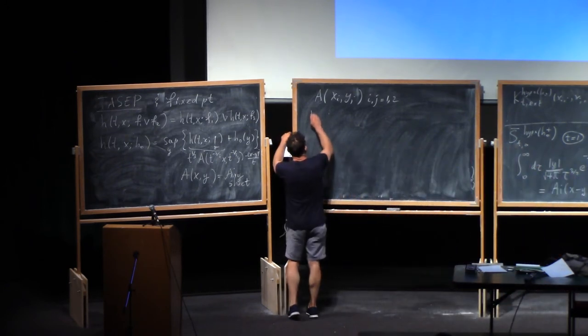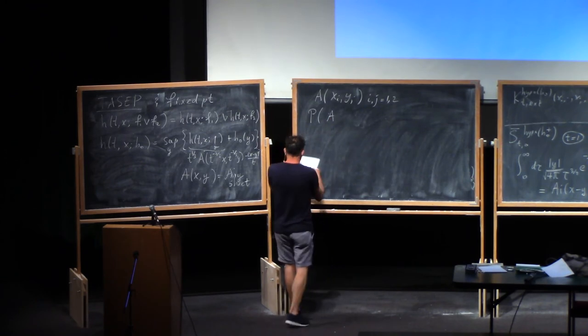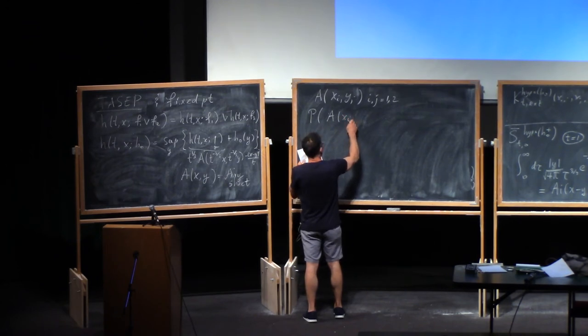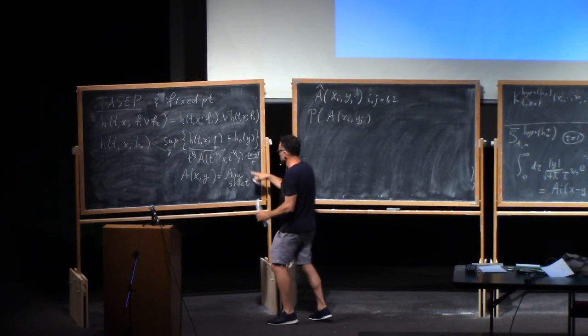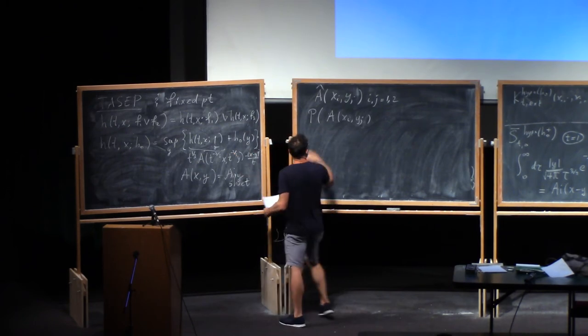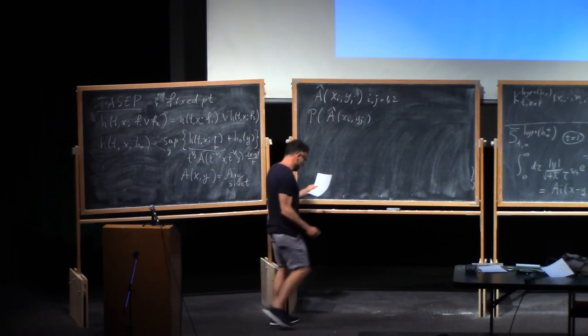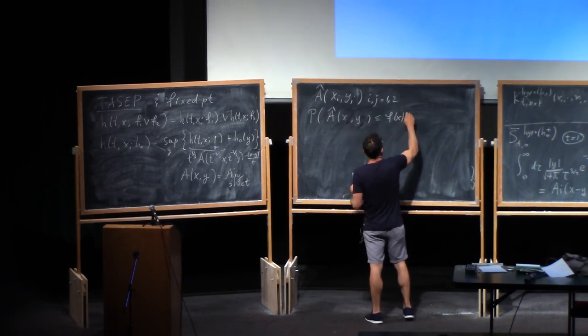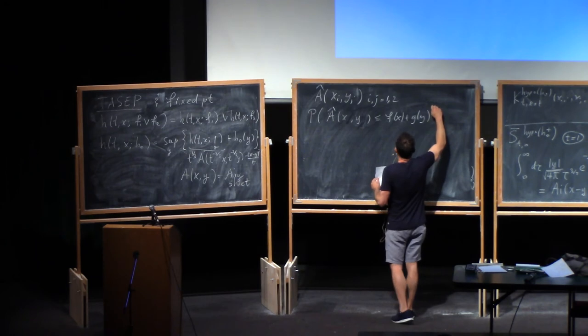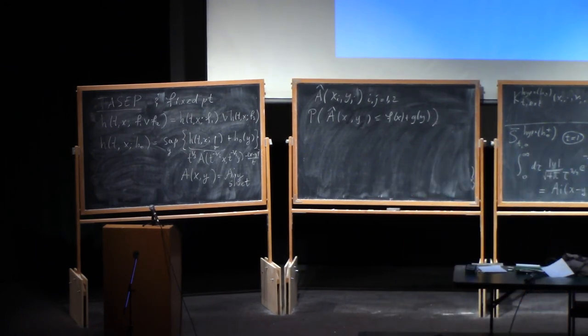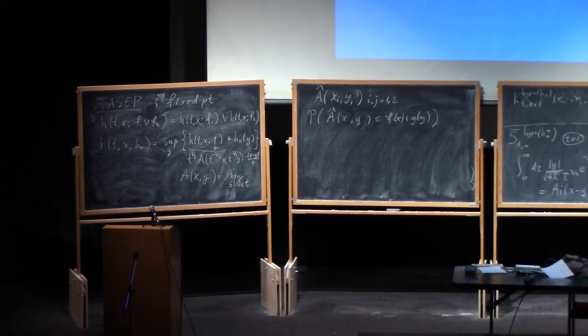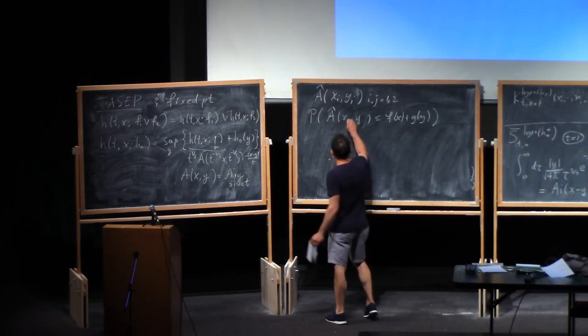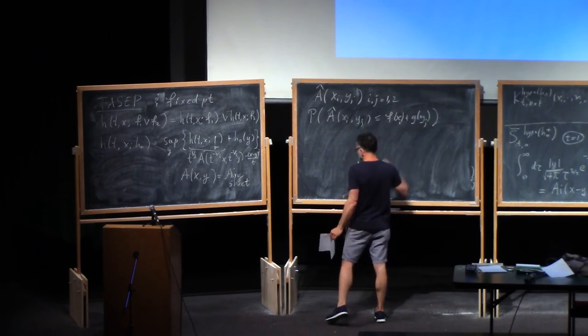The KPZ fixed point formula tells you exactly the following thing. And if you think about it, it's just precisely this. It says that Airy(X_i, Y_j)... actually, let me put hats on them. So the hat just means that you subtracted the parabola. That's a common notation here. So it tells you exactly that that thing is less than... in general, it tells you exactly this. You can compute that. For any f and g, you can compute this. This is exactly what the fixed point formula tells you about the Airy sheet. For any f and g. So if I put... I'll get that. So you get that information.